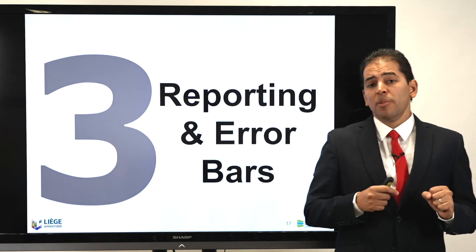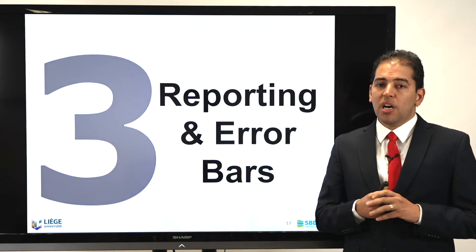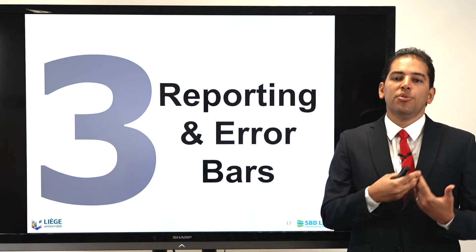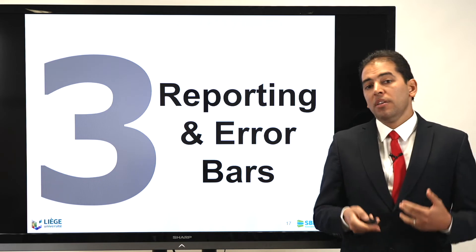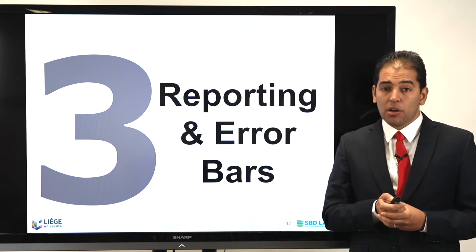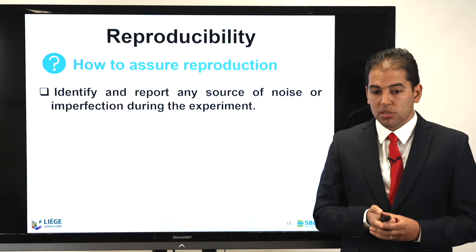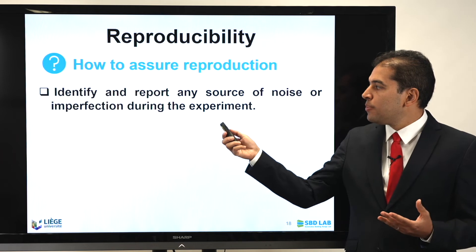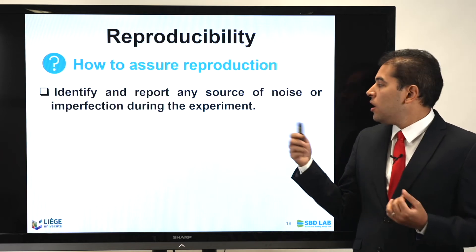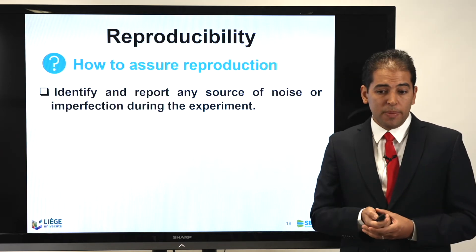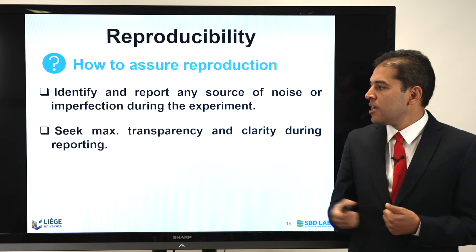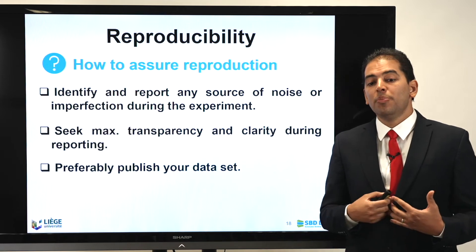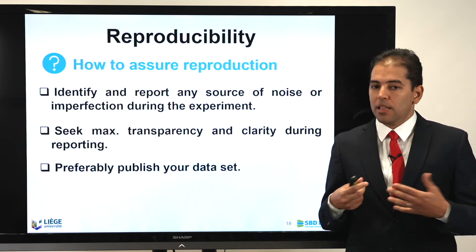How do you report and show that you reproduced your work? We have to talk about reporting and error bars. To assure reproduction, you have to identify and report any source of noise or imperfection during the experiment — this is one of the best practices. You have to seek maximum transparency and clarity during your reporting, and you need to preferably publish your dataset as mentioned earlier.